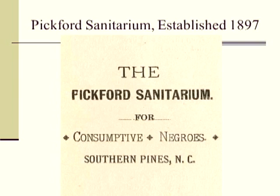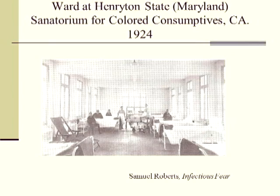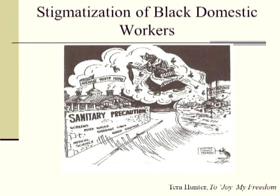There were separate Black tuberculosis asylums — one in Southern Pines, North Carolina for consumptive Negroes only, and one in Maryland as the state hospital for African Americans with tuberculosis. One of the things that happened was the stigmatization of Black workers, especially women — Black people were seen not as victims of disease, but as carriers of disease.